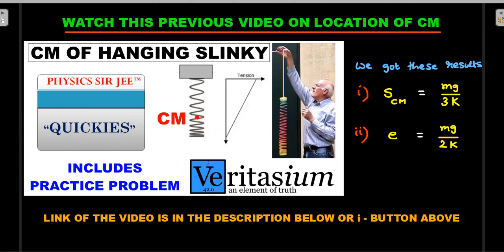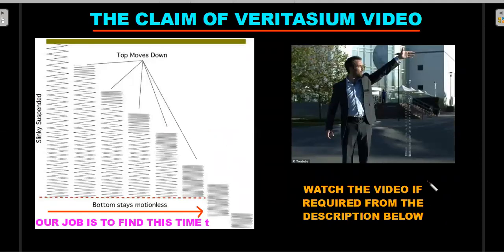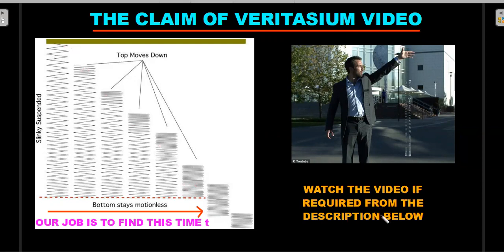The claim of the Veritasium video is that the top keeps moving down and the bottom stays at rest until the entire spring reaches its natural length position. Once the spring reaches natural length, the entire spring as a rigid object starts moving down. Our job is therefore to calculate the time taken for the slinky, once suspended, to reach its natural length. I'll explain it quickly so the video is shorter — for an elaborate explanation, go look at the Veritasium channel.